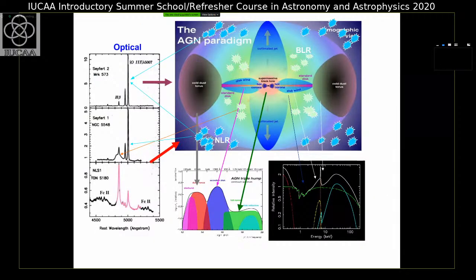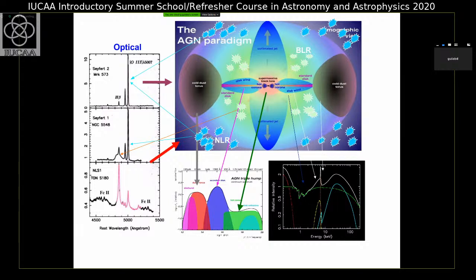The size scale of the supermassive black hole is of the order of the Schwarzschild radius, given by 2GM/c². The luminosity can be thought of in terms of the Eddington luminosity; usually the luminosity is lower than the Eddington luminosity. The Eddington luminosity is roughly 10^38 ergs per second for one solar mass black hole. We observe many phenomena and need to understand how this configuration produces observational features across the entire electromagnetic spectrum.